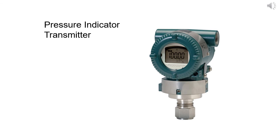This type of electronic pressure indicator — sensing and indicating — is used in the field. Understand what pressure sensor is being used in the field and what type of transmitter is being used, and how it works.